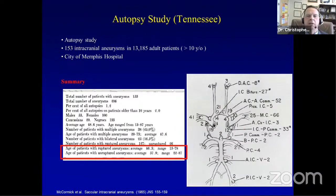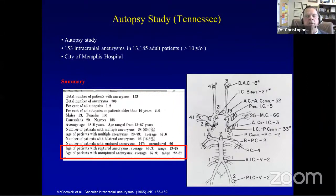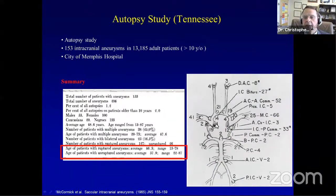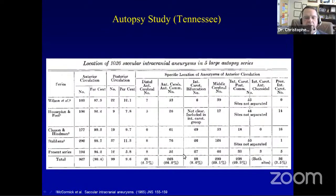An autopsy study from Tennessee with over 13,000 adult patients gives us a distribution of aneurysm location. Interestingly, when you perform an autopsy, the carotid artery is cut at the periclinoid location, and these studies actually underestimate the number of aneurysms. With advanced imaging we now see a large number of periclinoid aneurysms — sometimes only 2–3 millimeters — that autopsy misses. Pooled data from several autopsy studies confirms that the majority of aneurysms are in the anterior circulation, consistent with clinical practice.